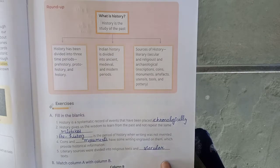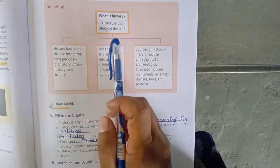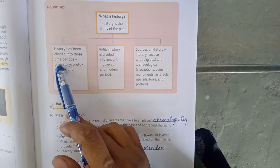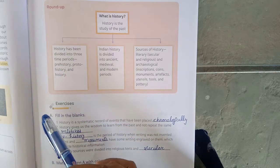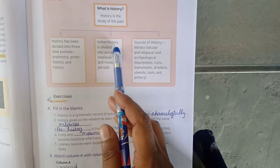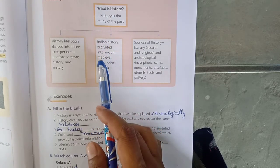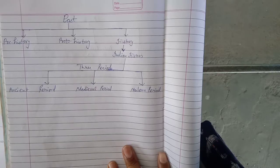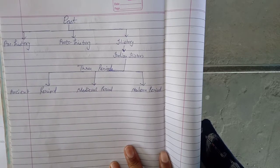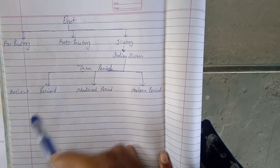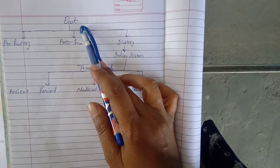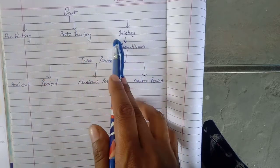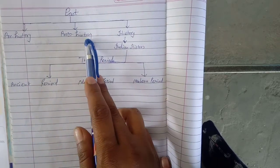In the first video of this chapter, we learned about what is history, and history is divided into 3 periods. Past is divided into pre-history, proto-history, and history.